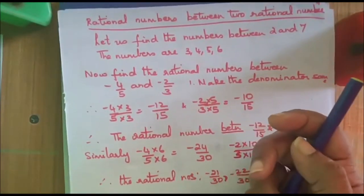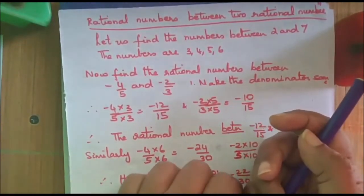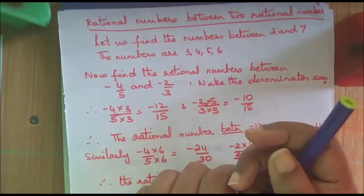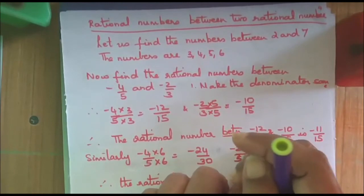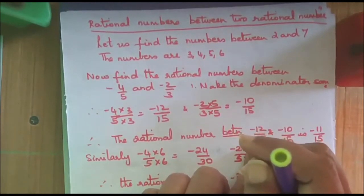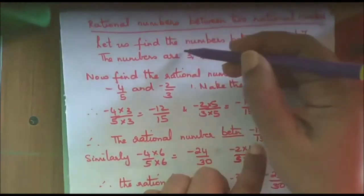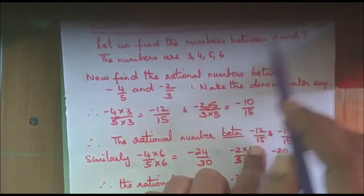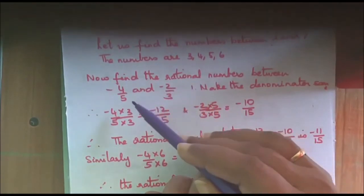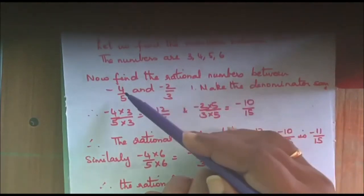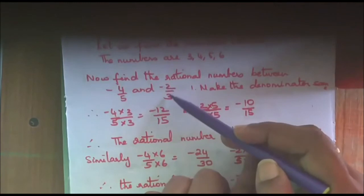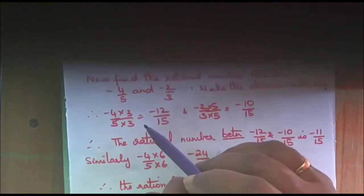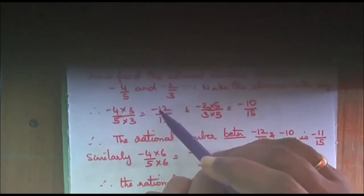Now, we will go to the next one, rational numbers between rational numbers. Suppose we are given 2 integers, 2 and 7, and you are asked to find the numbers between 2 and 7. You can write it immediately. What are they? 3, 4, 5, 6 are the numbers between 2 and 7. Similarly, if you are given 2 rational numbers, say like minus 4 by 5 and minus 2 by 3, you have to find the rational numbers between them. How can we find?